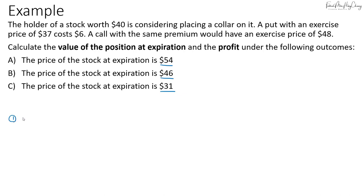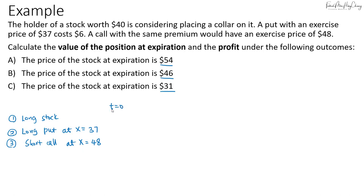We construct the strategy with a long stock position, a long put at the lower strike price of $37, and a short call at the higher strike of $48. At time zero, the long stock is worth $40. We buy the put for $6 and sell the call for $6, so those offset each other. The initial value of the zero-cost collar is $40, which is the price of the stock itself.